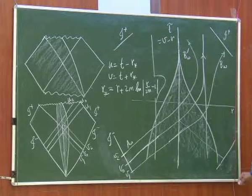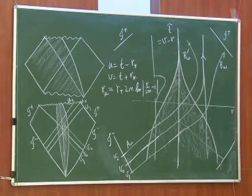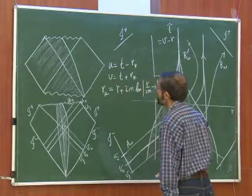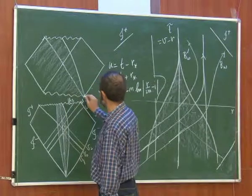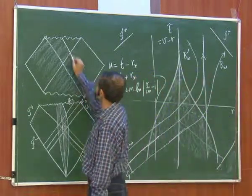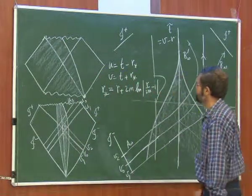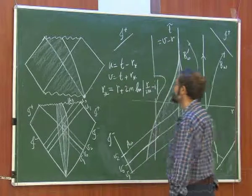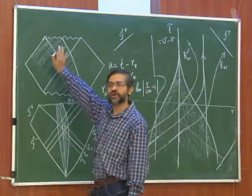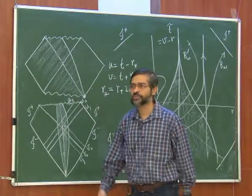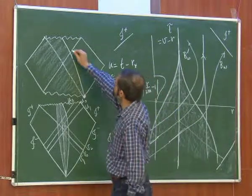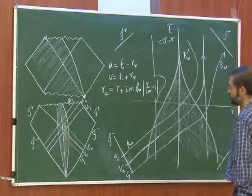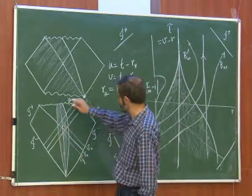Let us consider the surface of a star which is collapsing. The surface of a star will have a timelike massive particle trajectory — all massive particles start from this point in the infinite past. The shaded part will be described by some different geometry, so that is not part of the Schwarzschild geometry, but the outside unshaded part will still be governed by Schwarzschild geometry. In particular, this will be the horizon. You can make a conformal transformation to make it into the right half of the Penrose diagram.